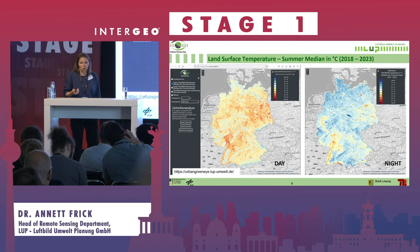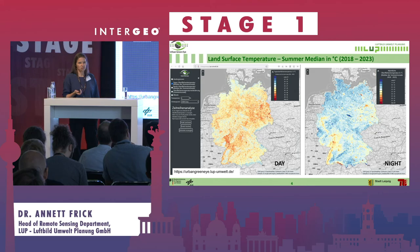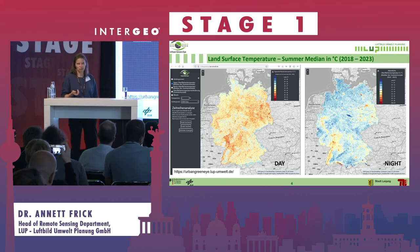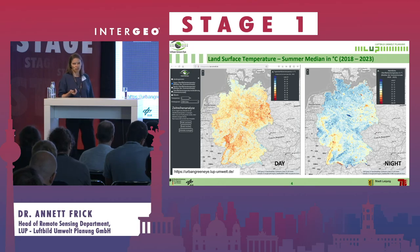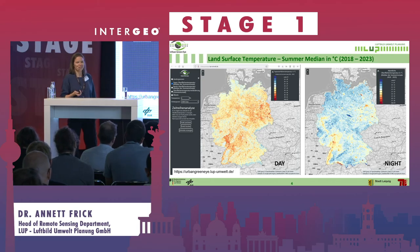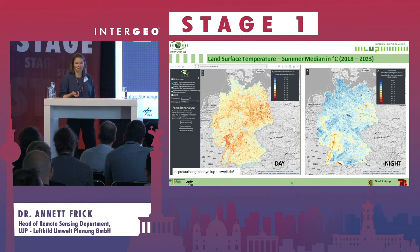One example I have brought today is the assessment of land surface temperature. This is a very important indicator in terms of heat risk assessment and heat adaptation. On the left side is the daytime summer temperature based on Landsat thermal infrared data, and on the right side it's a nighttime assessment of summer temperature based on MODIS. In the near future, there will hopefully be lots of sensors able to monitor land surface temperature at very high temporal and spatial resolution.